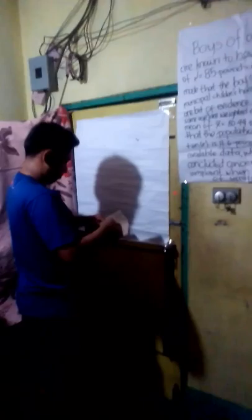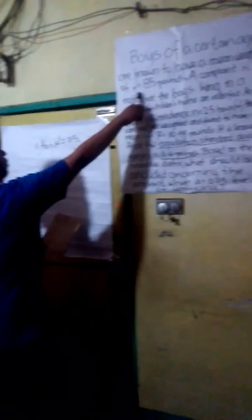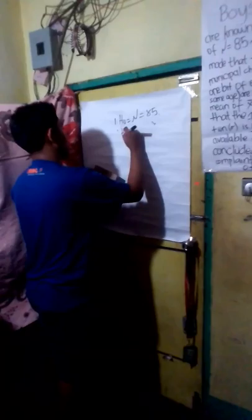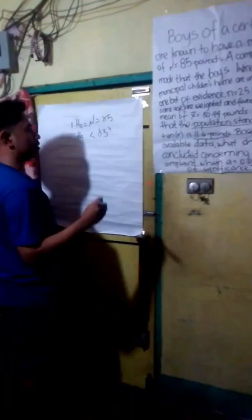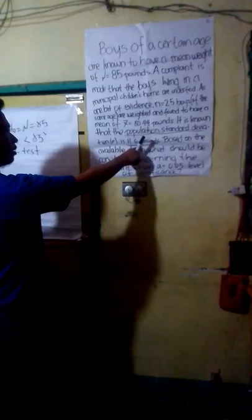So, kunin na natin ang null hypothesis. Ang null hypothesis ay 85. Dahil na rin sa given data na pinakita na 85 pounds ang null hypothesis. Ang alternate hypothesis natin ay less than 85. Ang test-use statistics natin ay Z-test, dahil ginagamit ang Z-test kapag given ang population standard deviation. Given din sa example na ito ang population standard deviation na 11.6 pounds.